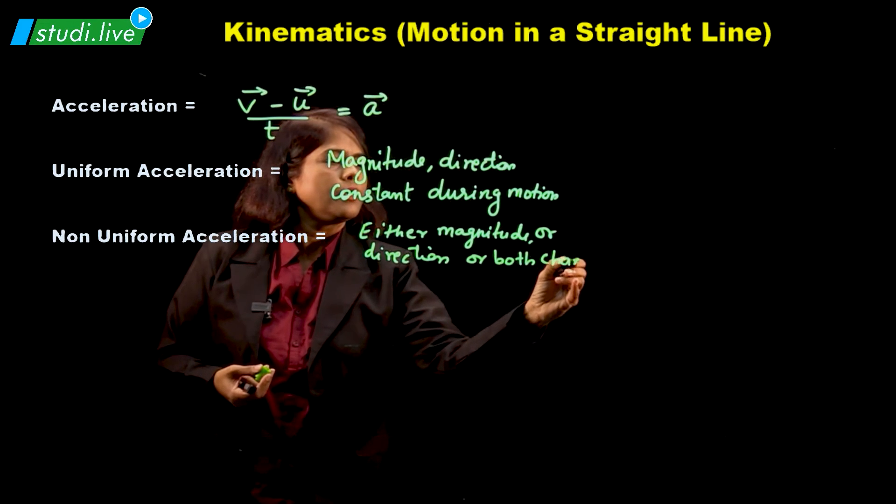Then comes non-uniform acceleration. In non-uniform acceleration, either magnitude will change, or direction will change, or both will change during motion. So we can say: in this case, either magnitude or direction or both change during motion.